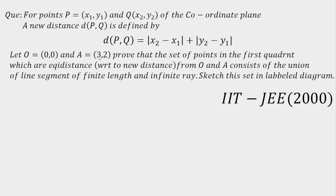Let us say O is the origin and A is the point (3, 2). We have to prove that the set of points in the first quadrant which are equidistant — with respect to the new distance — from the origin as well as from A consists of the union of a line segment of finite length and an infinite ray. We also have to sketch this.